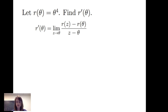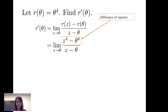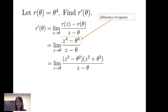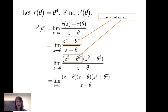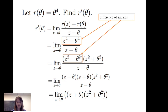Don't let the choice of variables throw you off. Evaluating the function at z and theta, I notice that in the numerator I have a difference of squares: z squared squared minus theta squared squared, all over z minus theta. I factor the numerator as z squared minus theta squared times z squared plus theta squared, then factor again as z minus theta times z plus theta. After canceling the z minus theta with the denominator, I take the limit as z goes to theta of z plus theta times z squared plus theta squared, giving me 2 theta times 2 theta squared, which is 4 theta cubed — the same result as before.